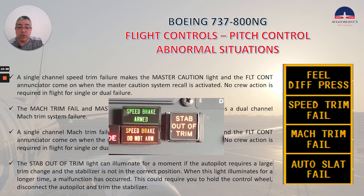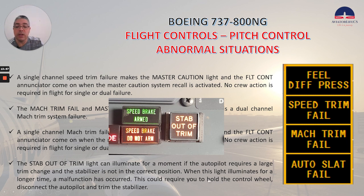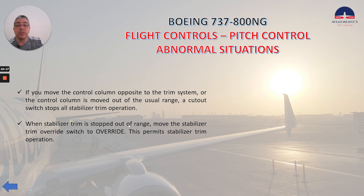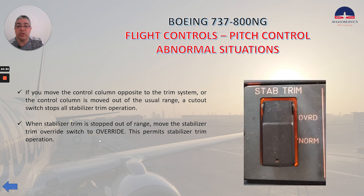The stab out of trim light can illuminate momentarily if the autopilot requires a large trim change and the stabilizer is not in the correct position. When this light illuminates for a longer time, a malfunction has occurred — this could require you to hold the control wheel, disconnect the autopilot, and trim the stabilizer. If you move the control column opposite to the trim system, or the control column is moved out of the usual range, a cutout switch stops all stabilizer trim operation. When stabilizer trim is stopped out of range, move the stabilizer trim override switch to override — this permits stabilizer trim operation.